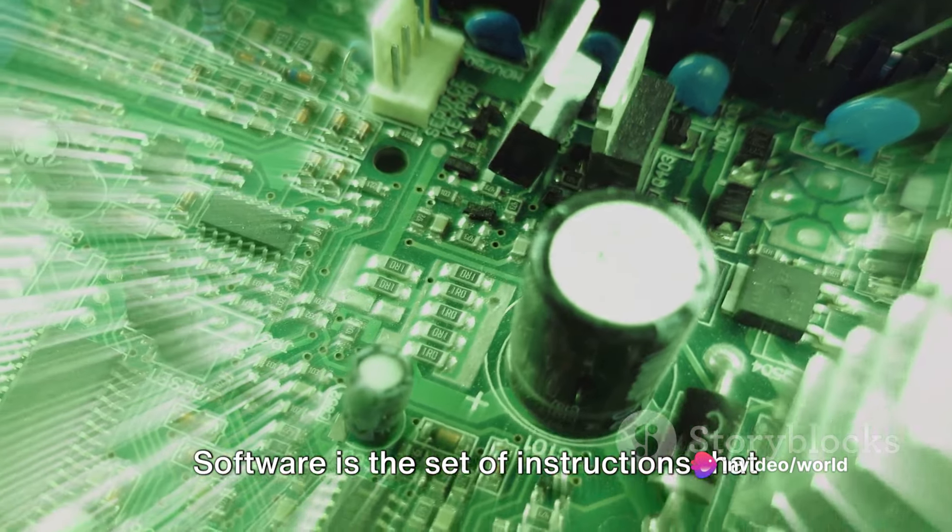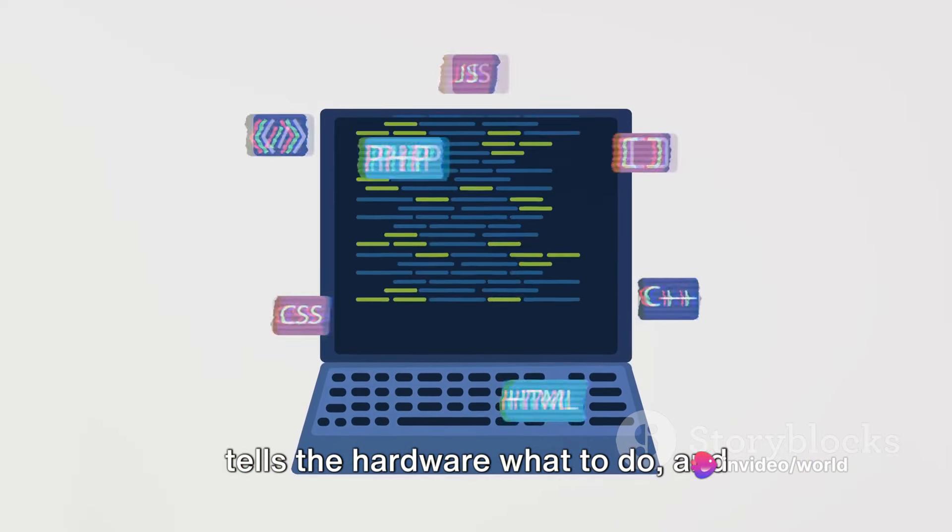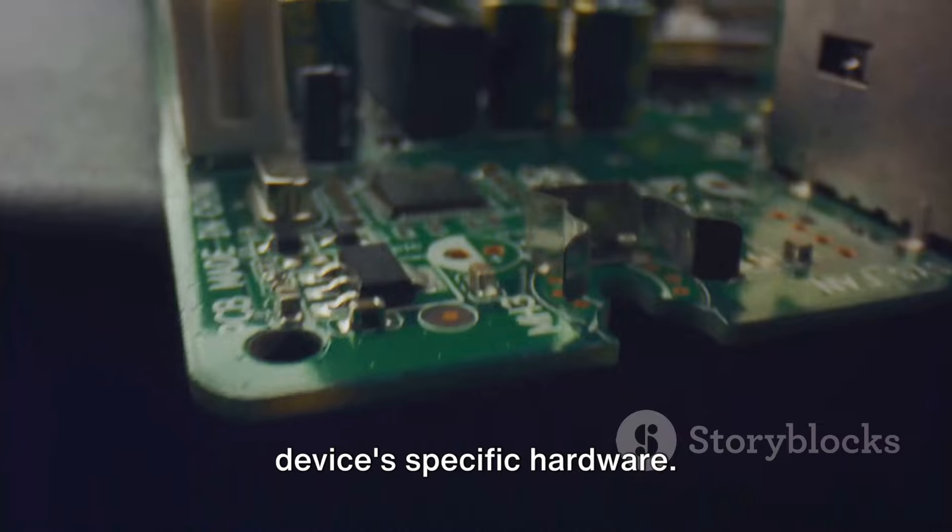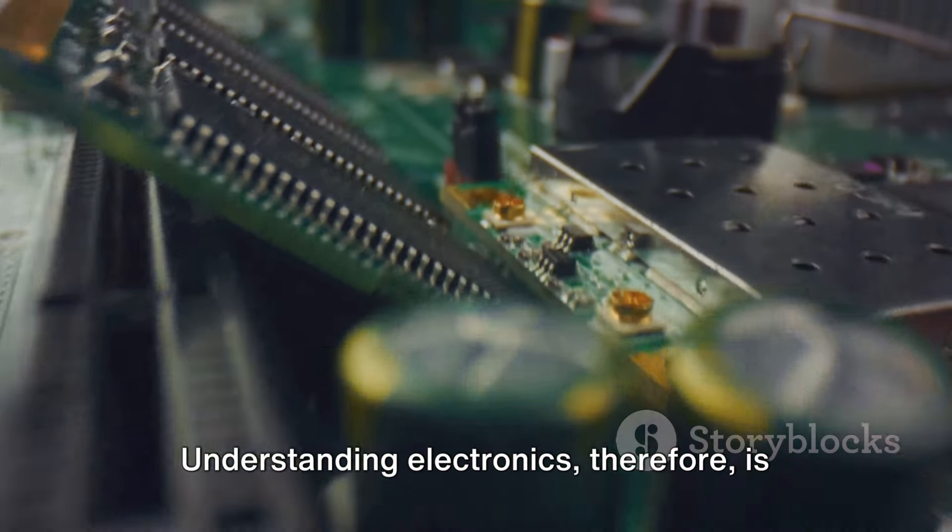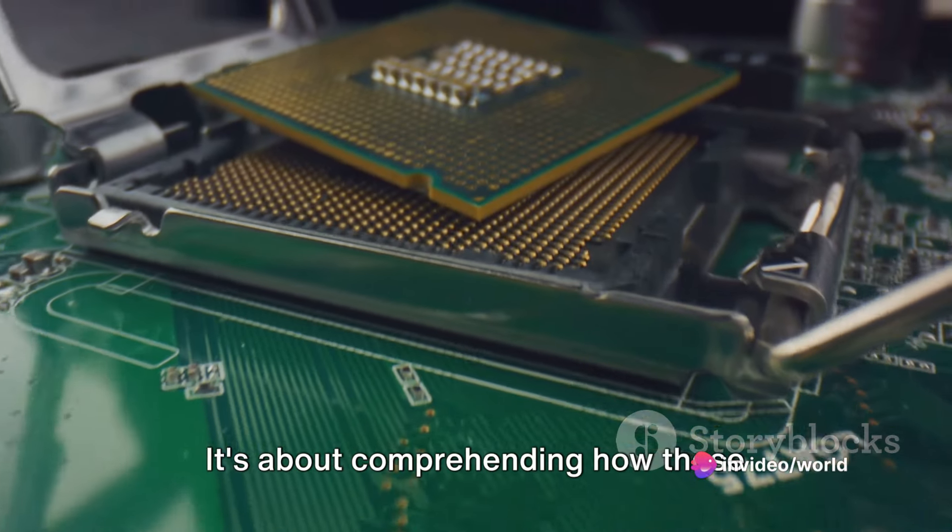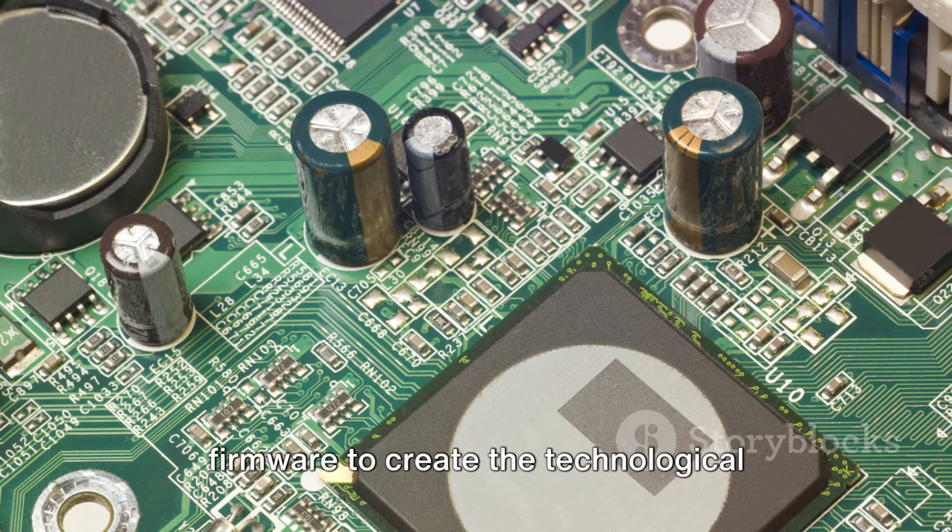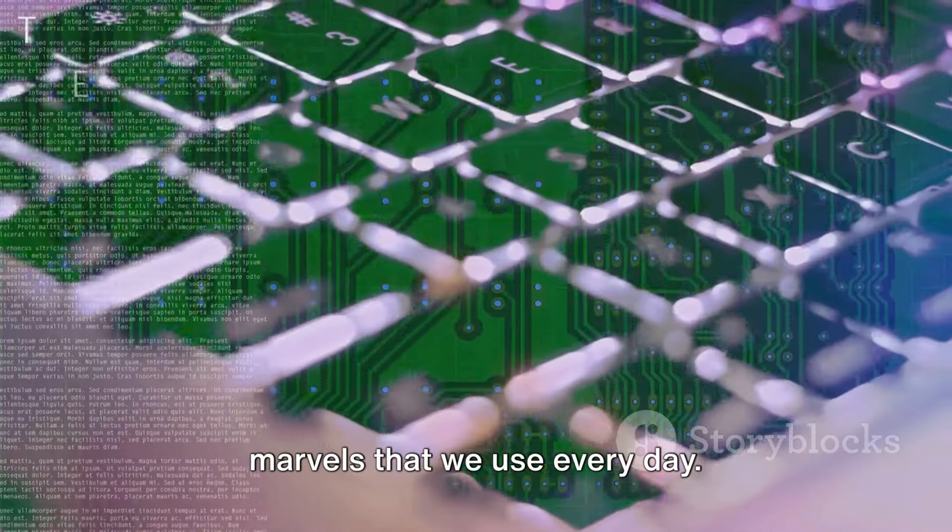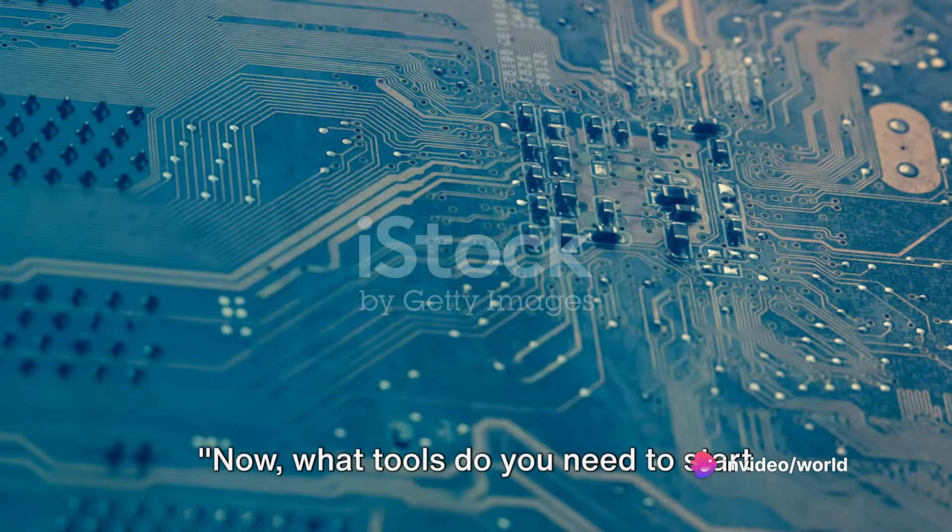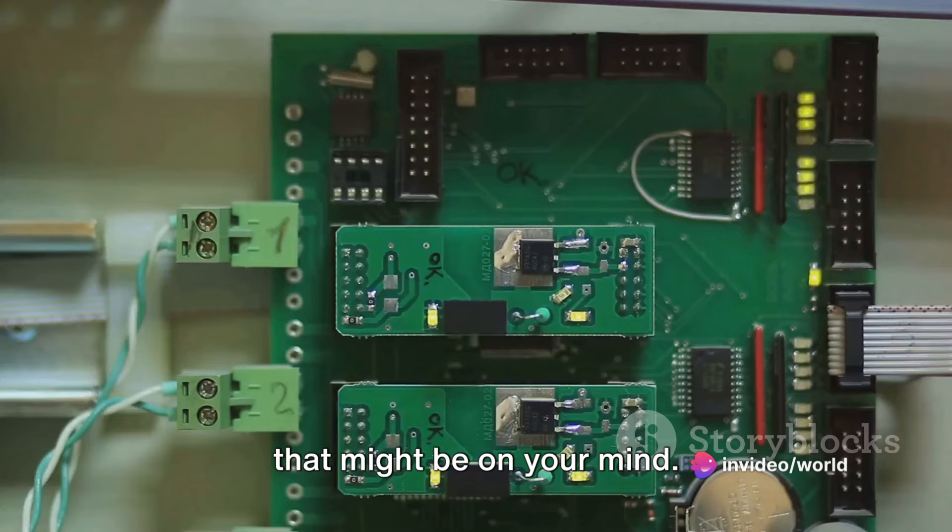But these components would be lifeless without software and firmware, the intangible aspects that breathe life into the hardware. Software is the set of instructions that tells the hardware what to do, and firmware is a specific type of software that provides low-level control for the device's specific hardware. Understanding electronics, therefore, is not just about knowing your resistors from your capacitors. It's about comprehending how these components interact with software and firmware to create the technological marvels that we use every day. Electronics, therefore, goes beyond the surface, diving deep into the heart of technology.